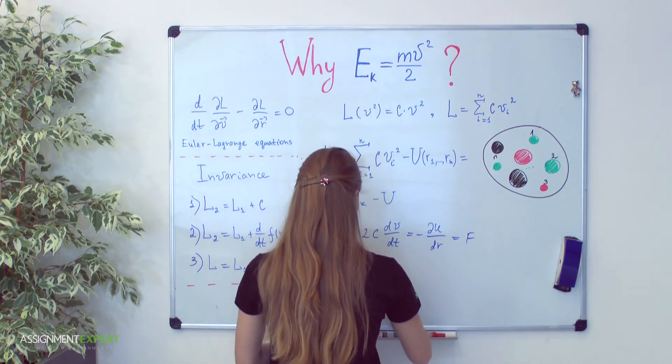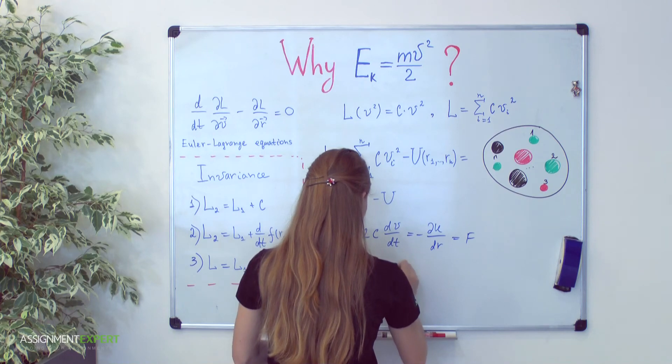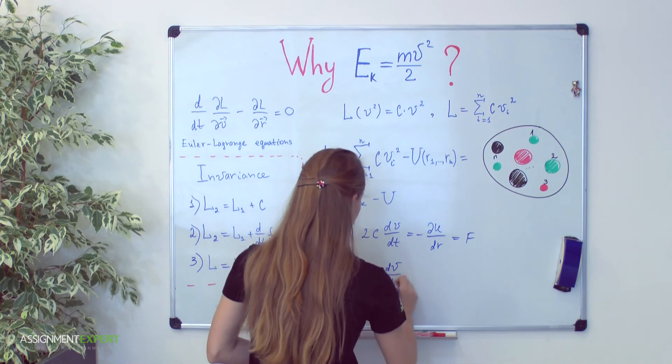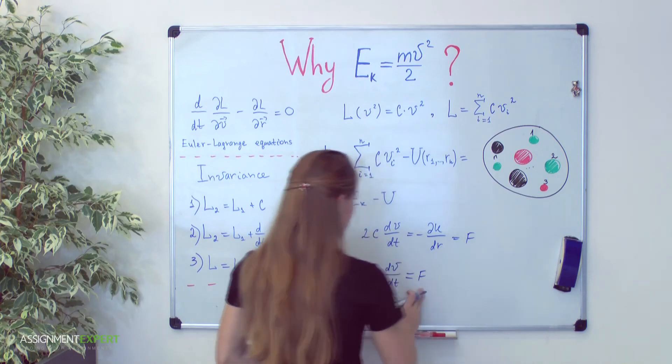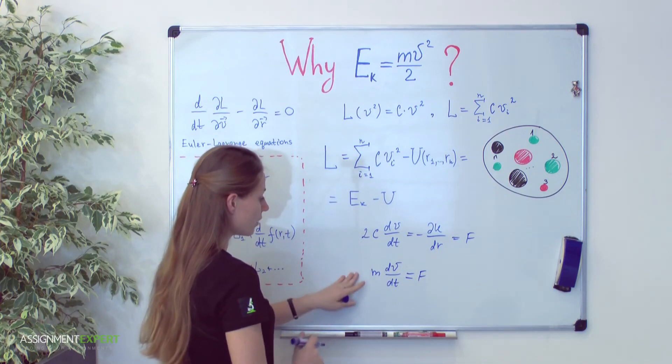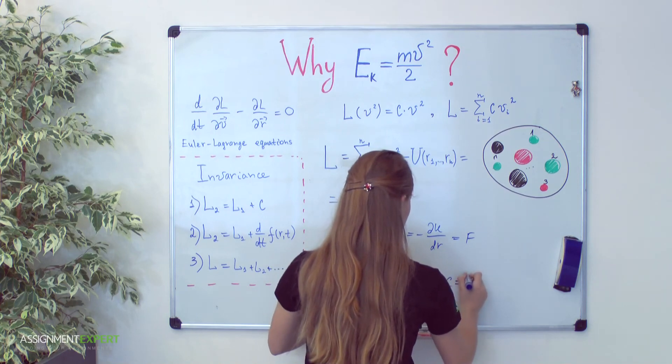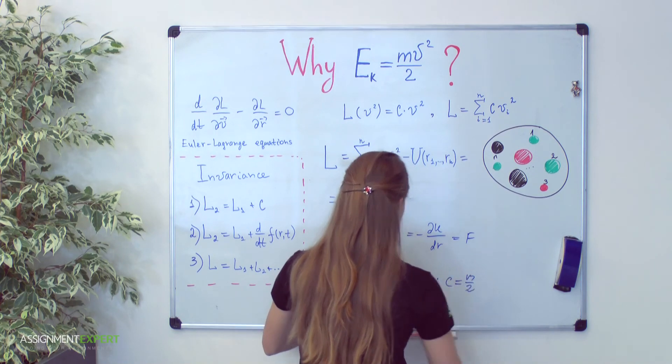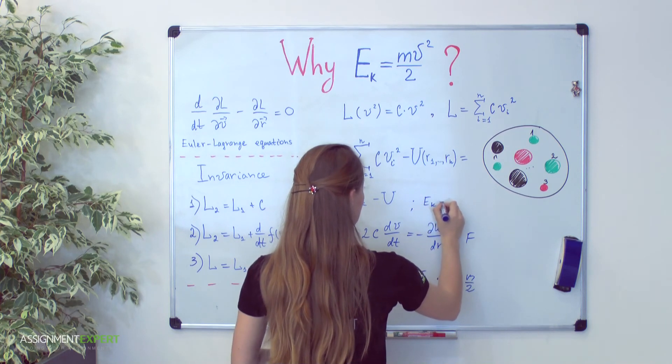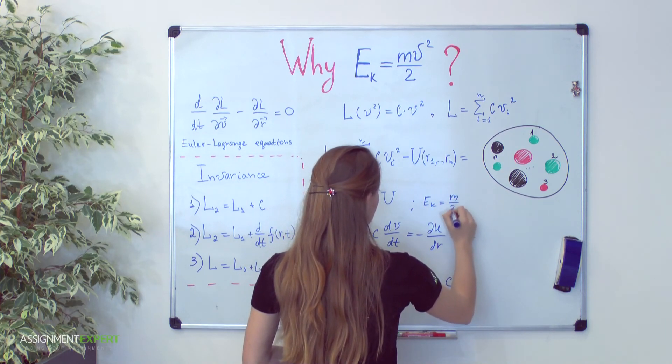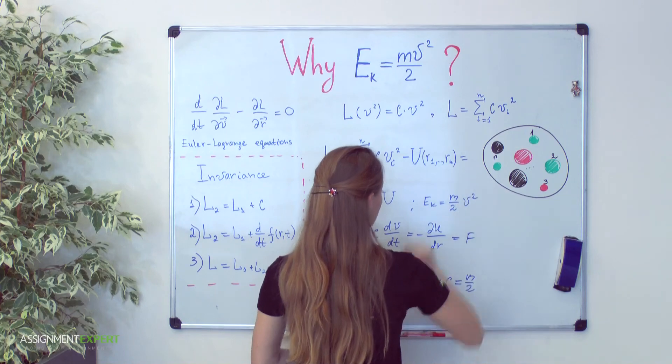Look, second Newton's law is mass multiplied by derivative of velocity and on the right hand side is also force. From here we can say that our constant c is mass divided by 2 and kinetic energy is simply mass divided by 2 multiplied by v square.